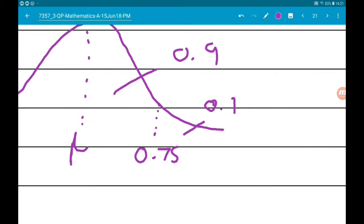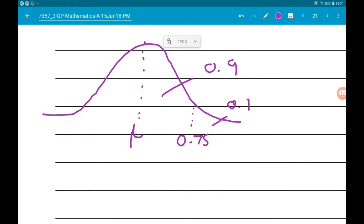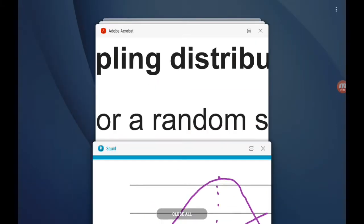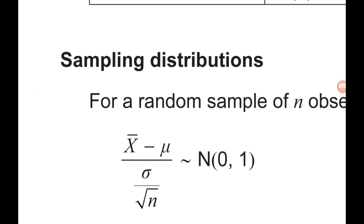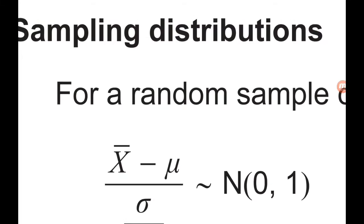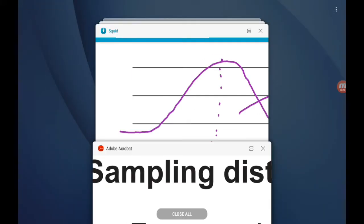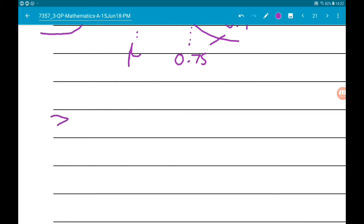What we want to do is standardize this distribution, so find our Z value. We're given sampling distributions but this isn't sampling, so all we do is ignore that over root n part on the bottom. So Z is X bar minus mu over sigma.